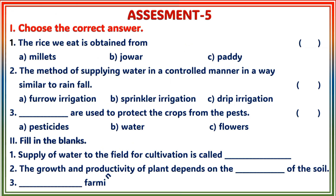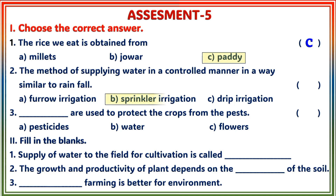Assessment 5, Section 1: Choose the correct answer. 1. Answer C: Paddy. 2. Answer B: Sprinkler Irrigation. 3. Answer E: Pesticides.